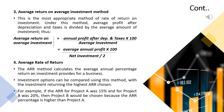The third method is average return on investment. In this method, average profit after depreciation and taxes is used. Average return on investment is equal to annual profit after depreciation and taxes divided by average investment, multiplied by 100.